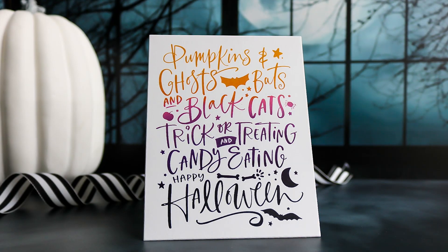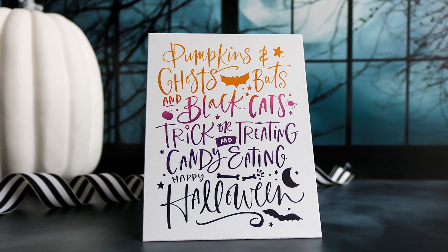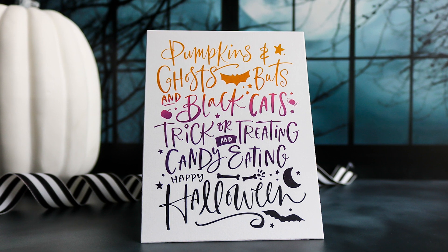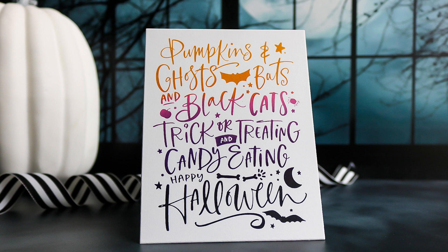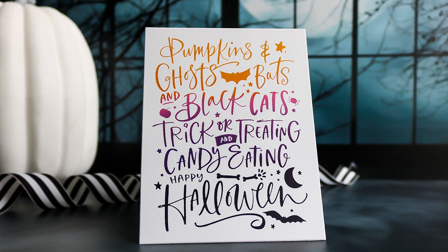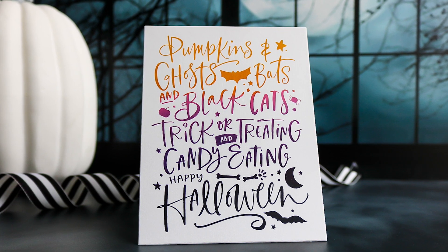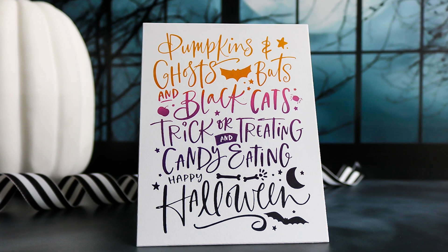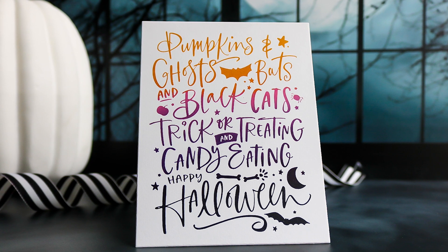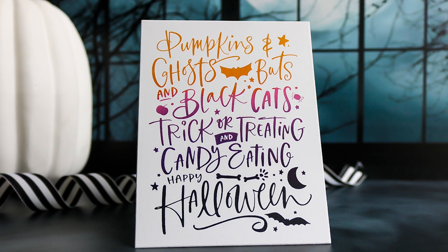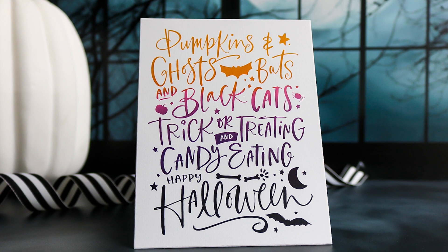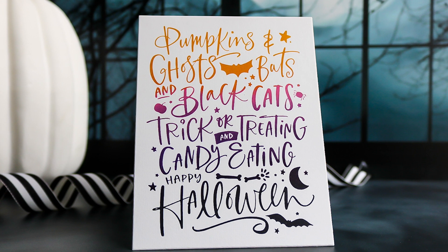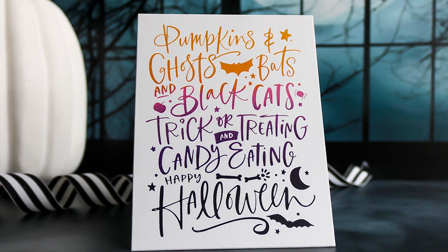And here we are with the pumpkins and ghosts card that we did at the end of the video. I love this so much. I love that blend of those colors. You could change the colors up if you wanted to do something more traditional with purples and greens and oranges. But this ink blending on this, I just absolutely love. The saffron ink and the wild berry ink are amazing for ink blending on these plates. I just love it. I will be creating more with this. I've had such a great time.